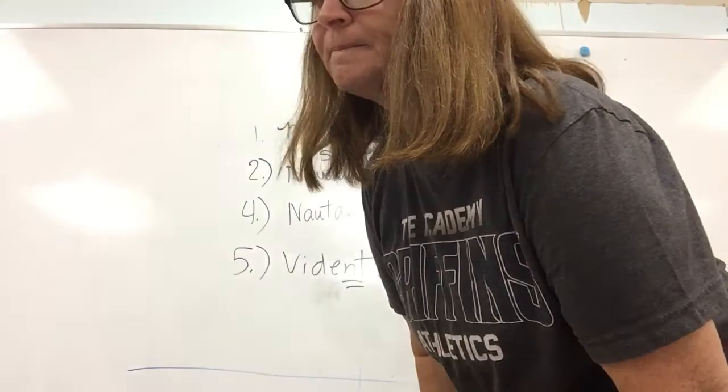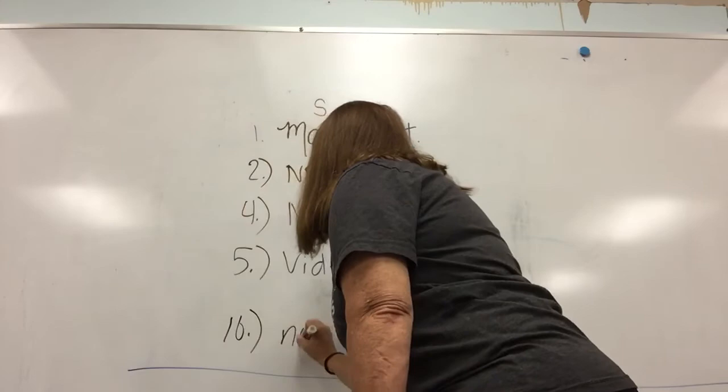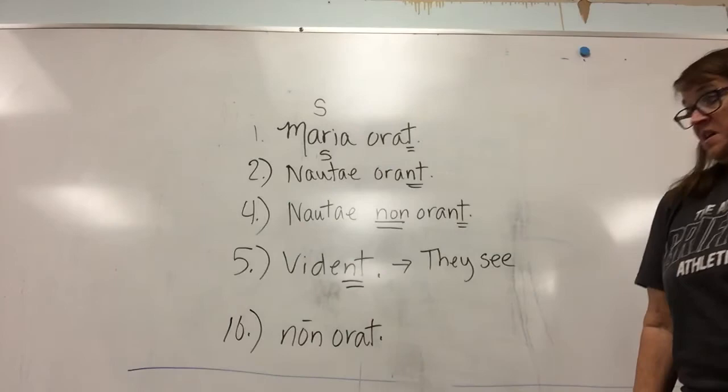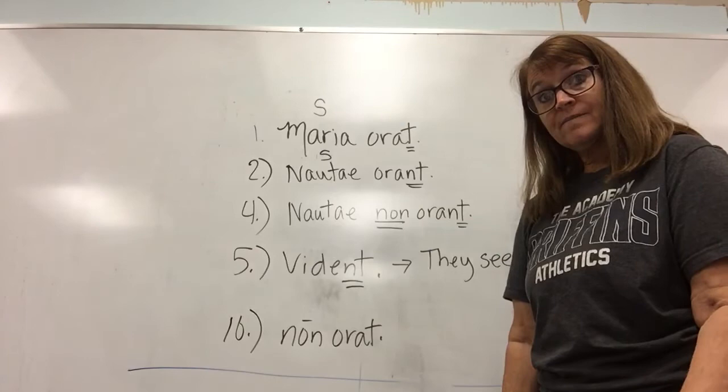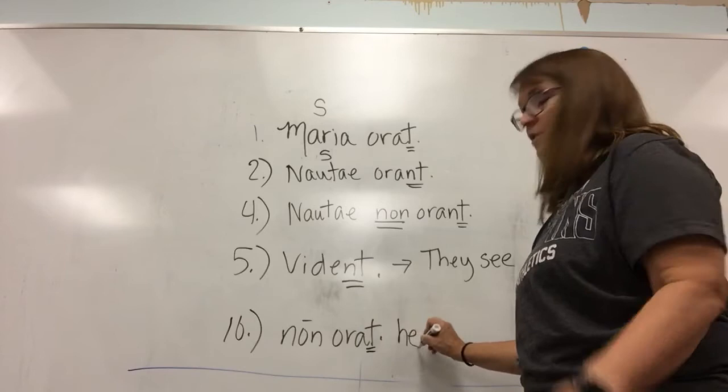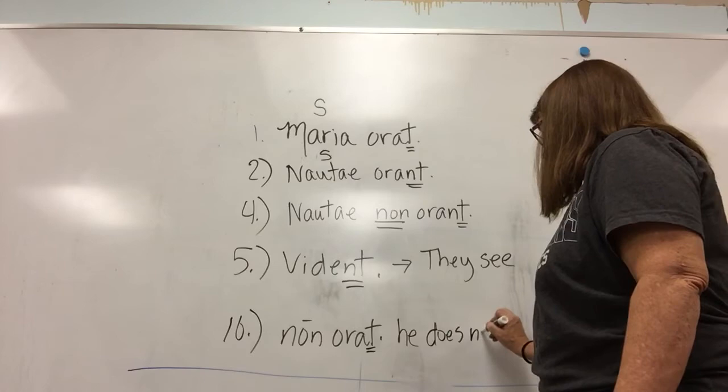Let's do number ten — this will be the last review exercise we do. Non orat. I don't see a subject; I just see an adverb and a verb. So where am I going to get my subject? That's right — from the verb. So -t means what? He — you could also say she or it. He does not pray.